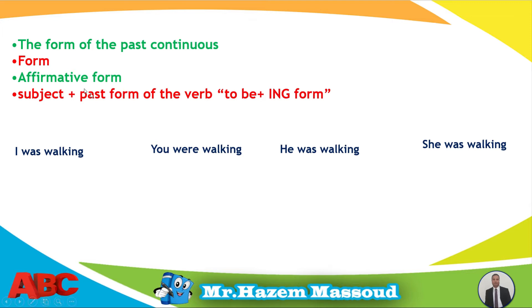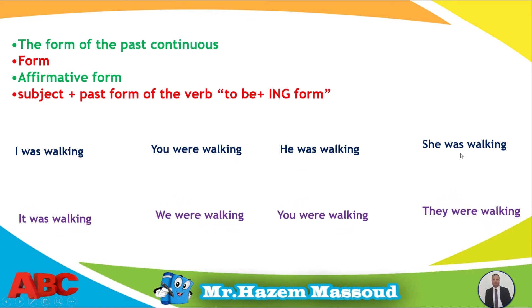For example: I was walking, you were walking, he was walking, she was walking, it was walking, we were walking, you were walking, they were walking. So here I use the past form of the verb 'to be' — was and were. I use 'was' with the subject pronouns I, he, she, and it. I use 'were' with the subject pronouns you, we, and they.